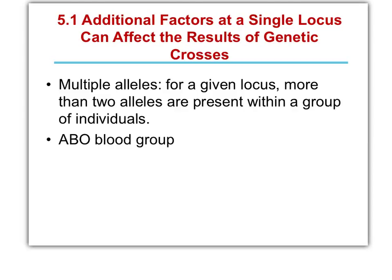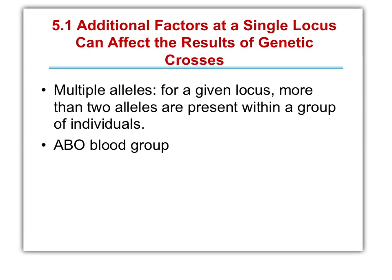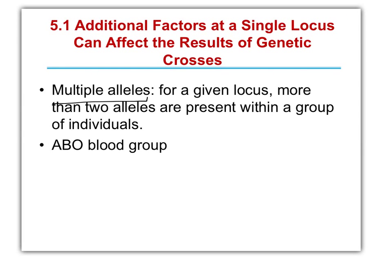Hi everybody, this is going to be a tutorial about multiple alleles. We did talk about multiple alleles in another lecture capture, the dominant series. But in this tutorial, we're going to talk about when there's more than one allele for a given locus — more than two, so at least three, within a group.